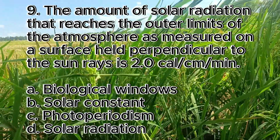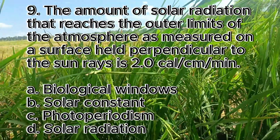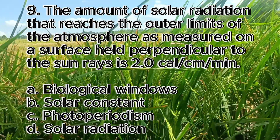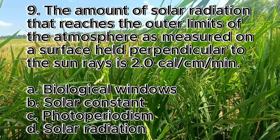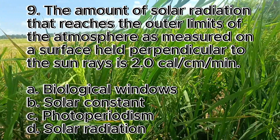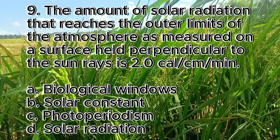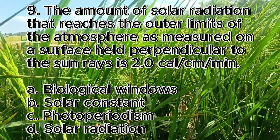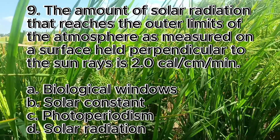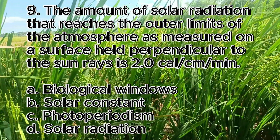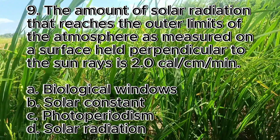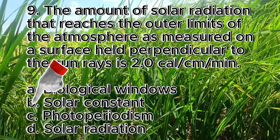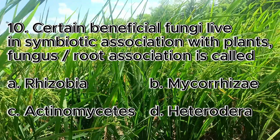Number 9. The amount of solar radiation that reaches the outer limits of the atmosphere as measured on a surface held perpendicular to the sun rays, is 2.0 cal/cm²/min. A. Biological windows, B. Solar constant, C. Photoperiodism, D. Solar radiation. The answer is letter B, solar constant.